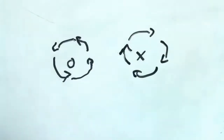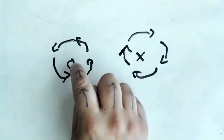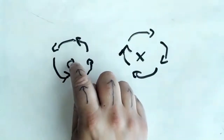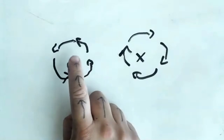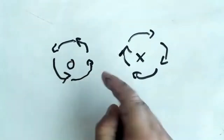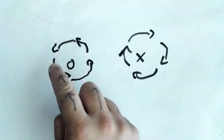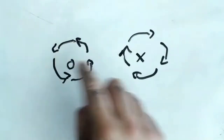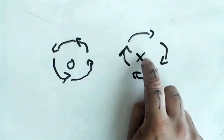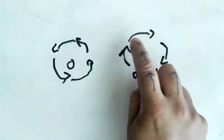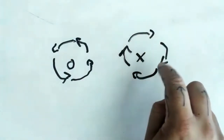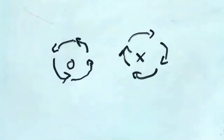So this is always going to be the case: if the current is coming out of the screen or paper, the magnetic field is going to be counterclockwise. If it's going into the page — represented by an X — the magnetic field is going to be clockwise. They could also ask this question backwards, so let's look at what that would look like.